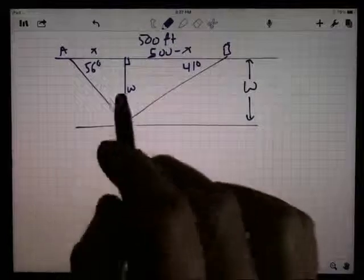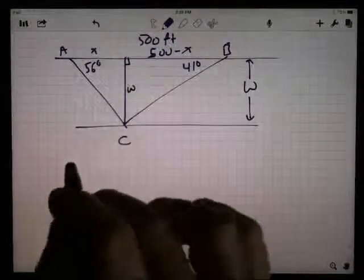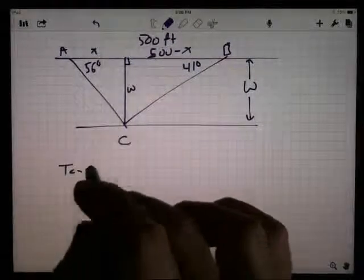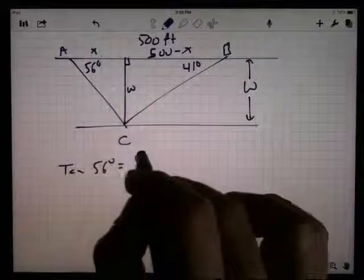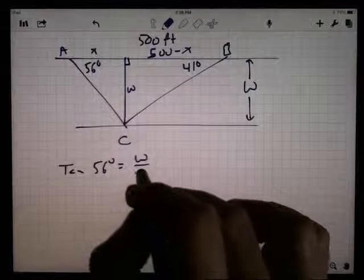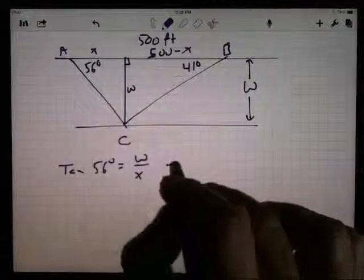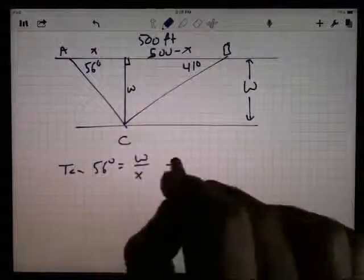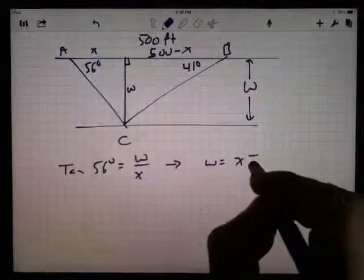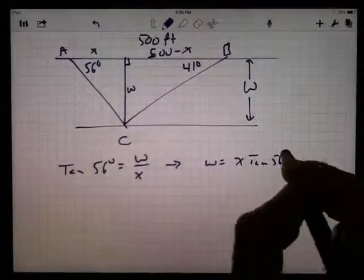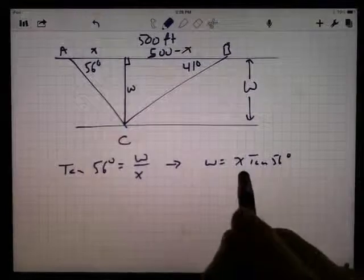On this left-hand triangle, I have this tangent. The tangent of 56 degrees is the opposite side, W, over the adjacent side, X, which, if I solve for W, is that W equals X times the tangent of 56 degrees. Problem is, I don't know what X is.